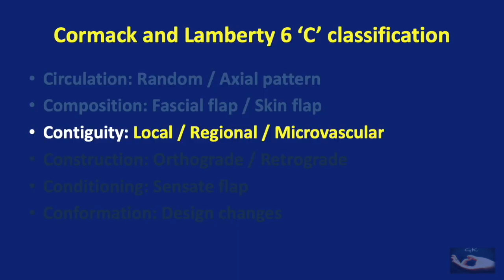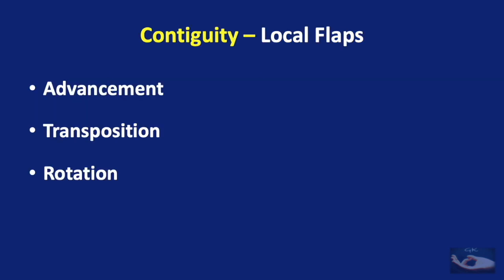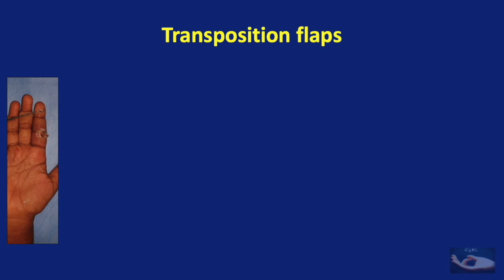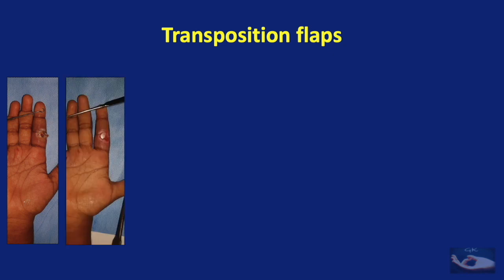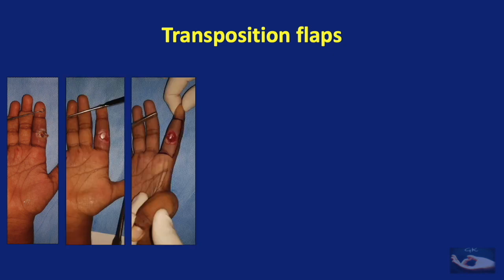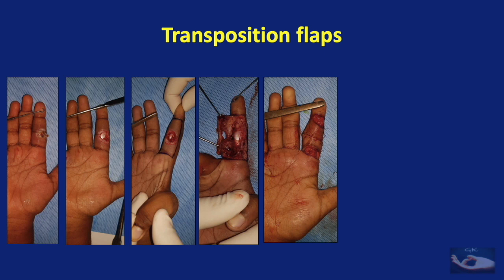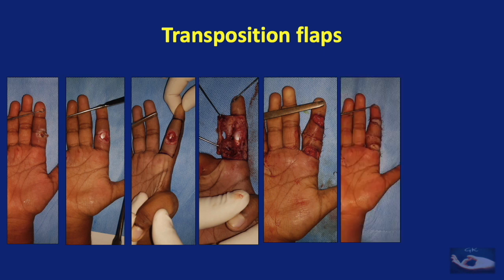As far as the contiguity of the intrinsic flap is concerned — meaning the nearness of the flap to the defect — it could be a local flap, regional flap, or microvascular flap. Commonly there are three types of local flaps: advancement flaps, transposition flaps, and rotation flaps. For example, a defect on the volar aspect of the proximal interphalangeal joint crease of the index finger can be covered with two transposition flaps planned proximally and distally on the ulnar side of the finger. The secondary raw areas are resurfaced with full thickness palmar skin grafts harvested from the hypothenar area.